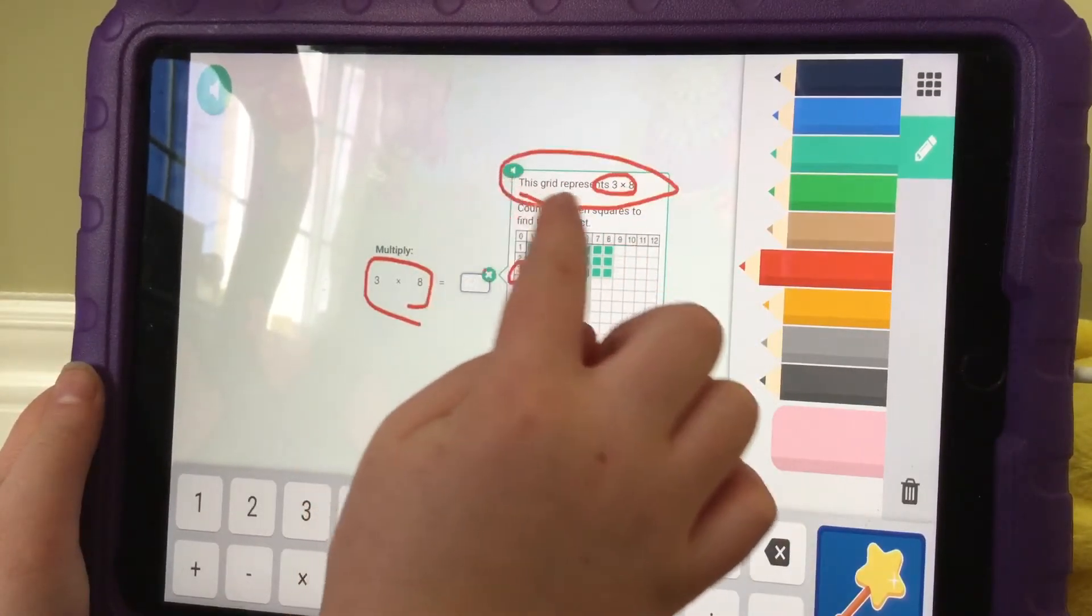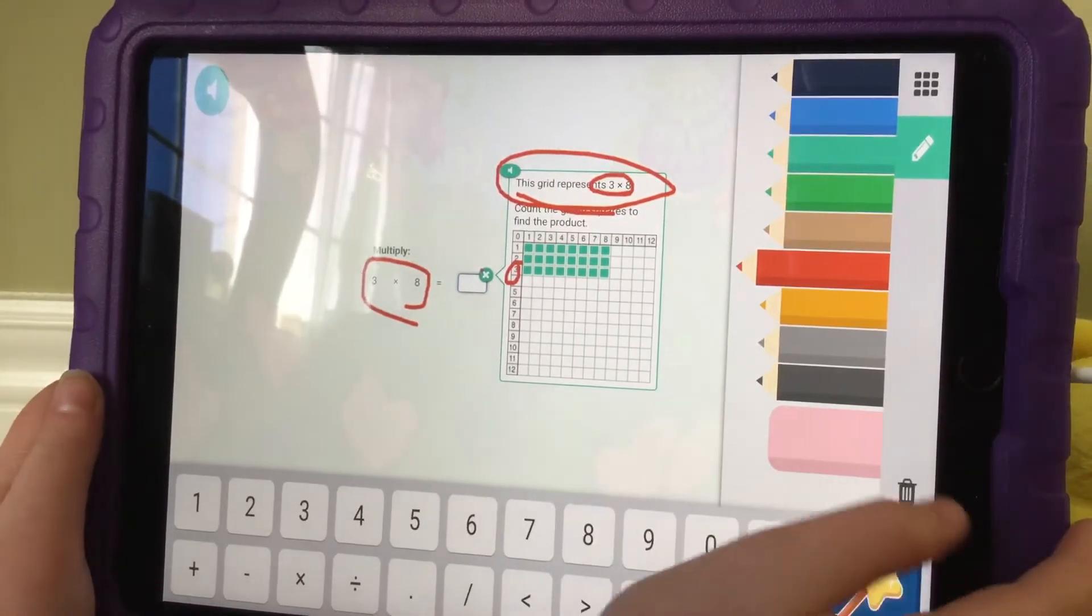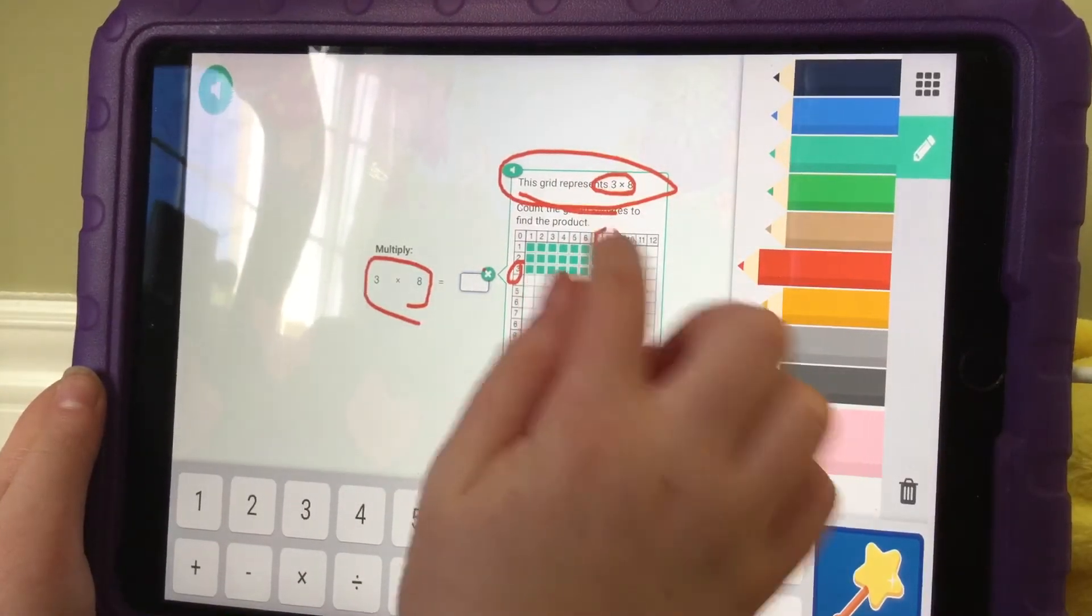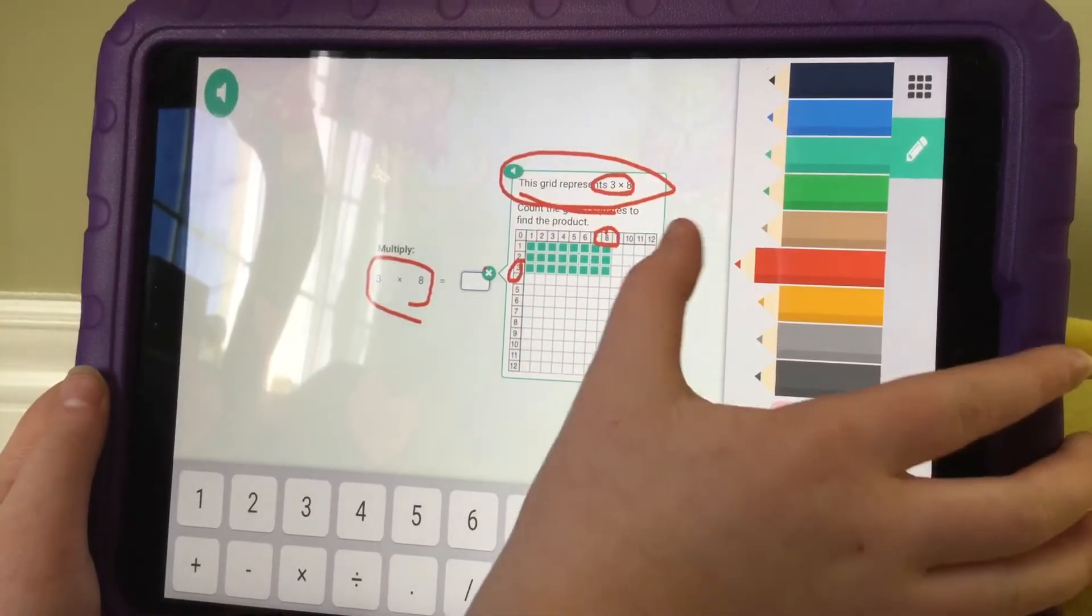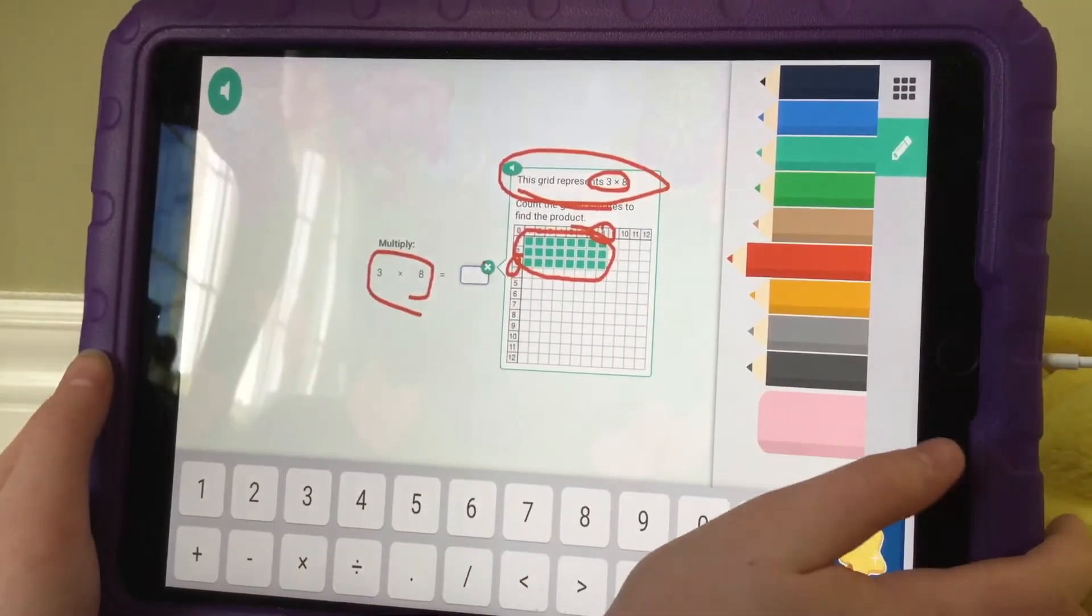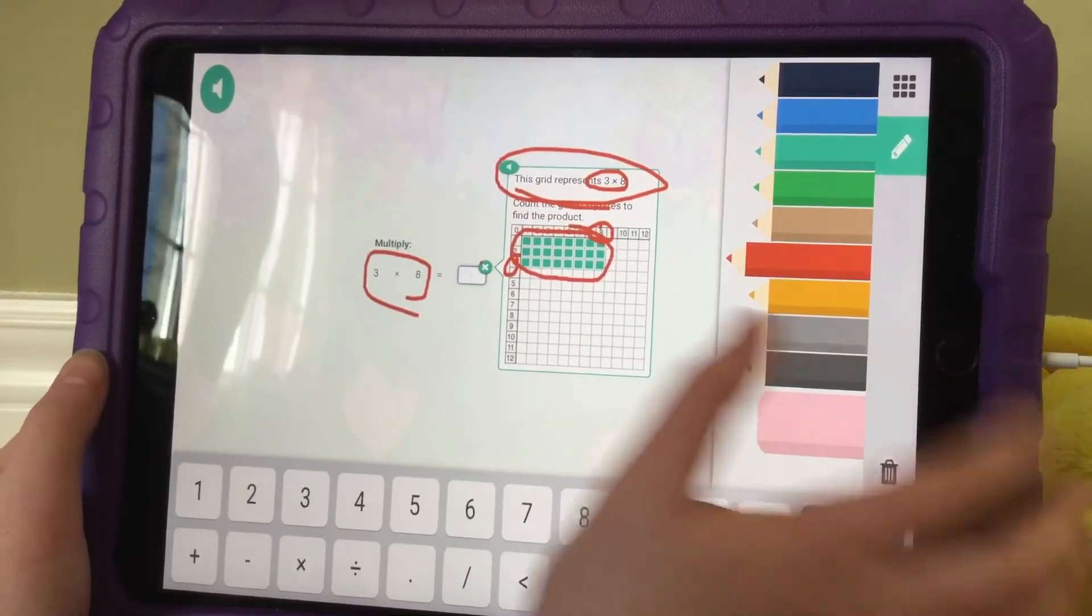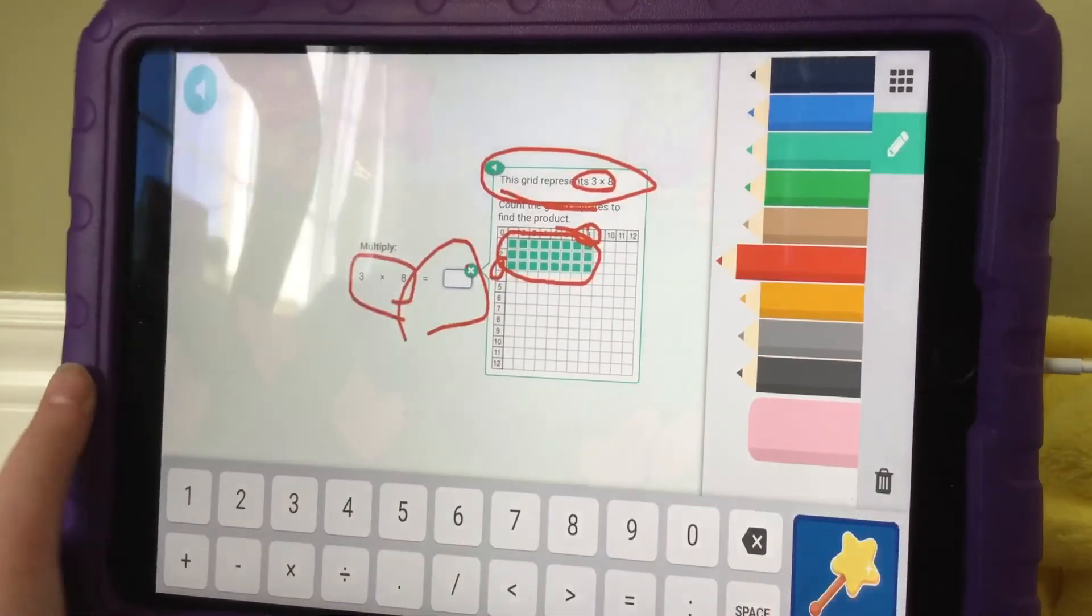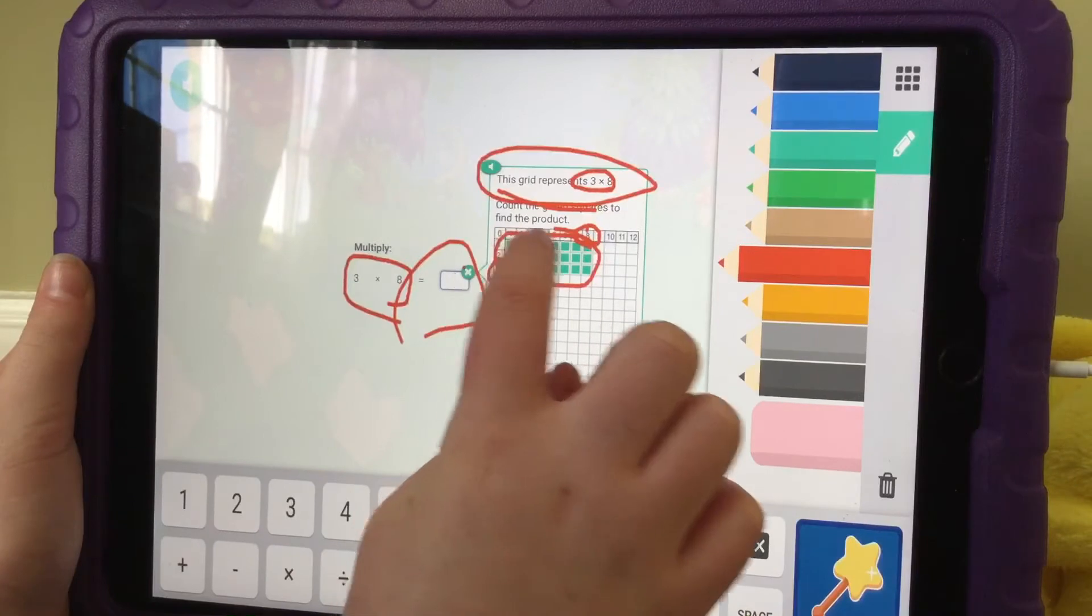See, this grid represents 3 times 8. All of these squares, whatever they equal to, would be the answer to this equation. So let's count them.